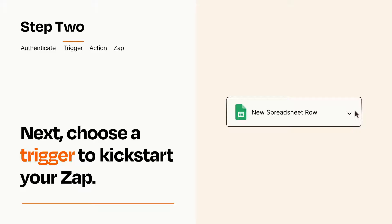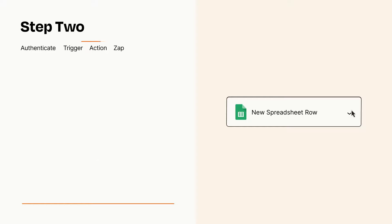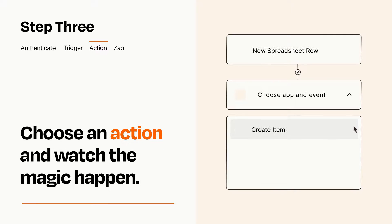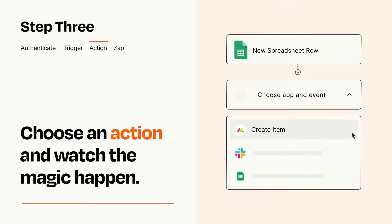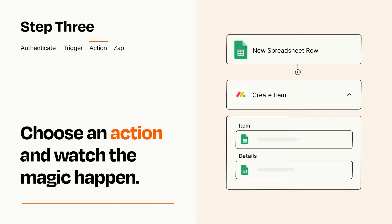This last part is where the magic happens. Choose the action you want to happen in your target app. You'll see a bunch of fields where you can specify the details of your Zap. You can type free form text or pull data in from your trigger step as needed.